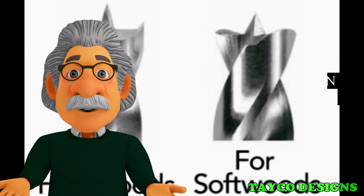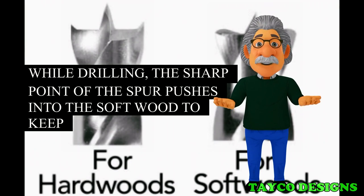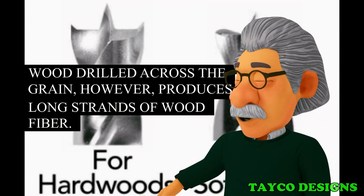The center of the drill bit is given not the straight chisel of the twist drill bit, but a spur with a sharp point and four sharp corners to cut the wood. While drilling, the sharp point of the spur pushes into the soft wood to keep the drill bit in line. Metals are typically isotropic, so even an ordinary twist drill bit will shear the edges of the hole cleanly. Wood drilled across the grain, however, produces long strands of wood fiber.